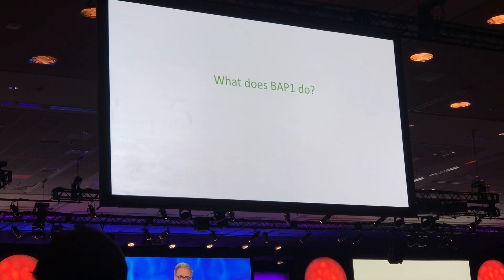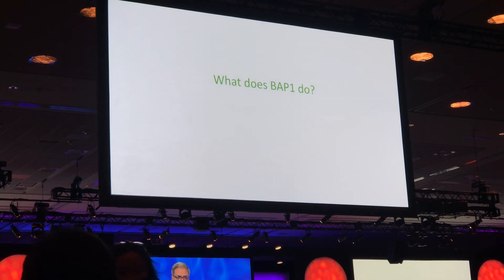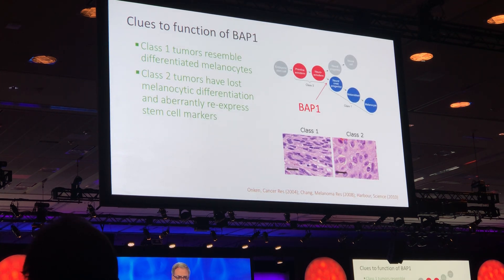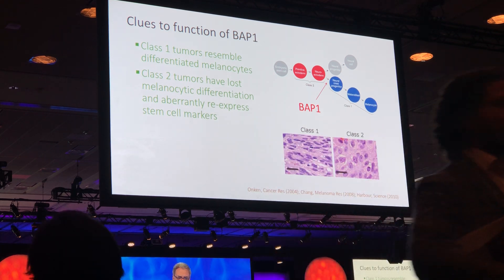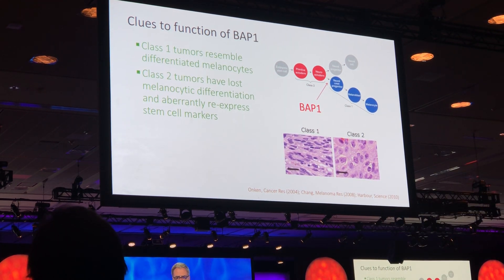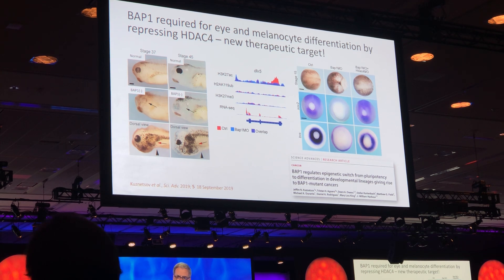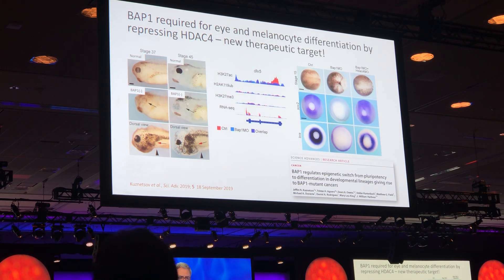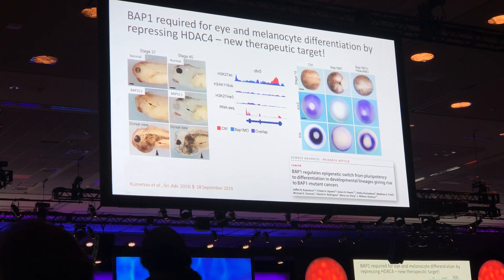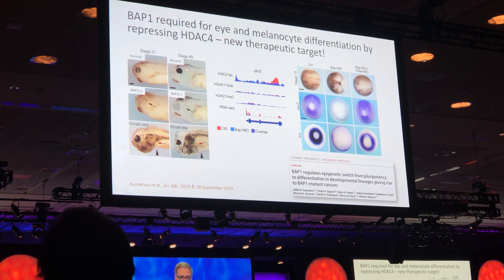But what does BAP1 actually do? We took a novel approach to understand this, because we think it's too complex to really study in vitro in a biochemical way — we used an in vivo model. This was based on the understanding that class 1 tumors versus class 2 tumors really differ in their level of differentiation. So we thought that BAP1 probably is doing something in development and differentiation. We used a Xenopus vertebrate development model, recently published in Science Advances. We found that if you don't have BAP1 during development, you don't get an eye — you need BAP1 to actually get an eye. And you need it for normal melanocyte differentiation. The molecular phenotype closely parallels what we see in uveal melanoma: without BAP1, we don't maintain melanocytic differentiation.